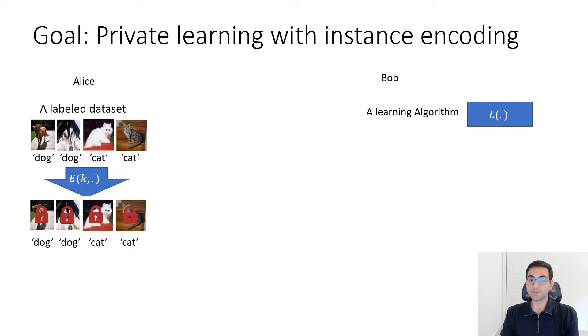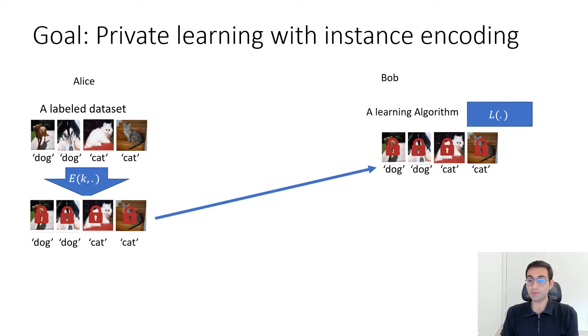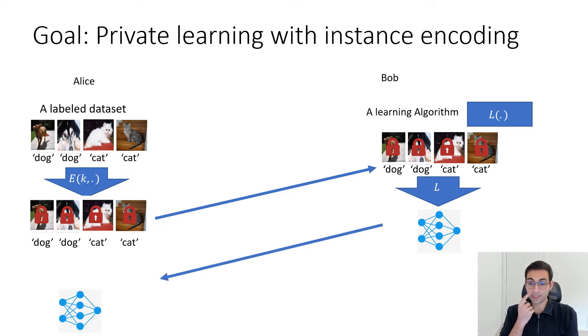The way it works is that Alice first locally encodes her data using some encoding algorithm that can potentially take keys and sends this data to Bob. Bob trains a model on top of these encodings and sends it back to Alice. Alice can use this model, but only in a specific way. She should first encode the input to the model, and only then can she expect to see high utility. Note that these encodings are only done on the instances themselves. Labels are not encoded, labels are visible in the plain. That's why we call it private learning with instance encoding.